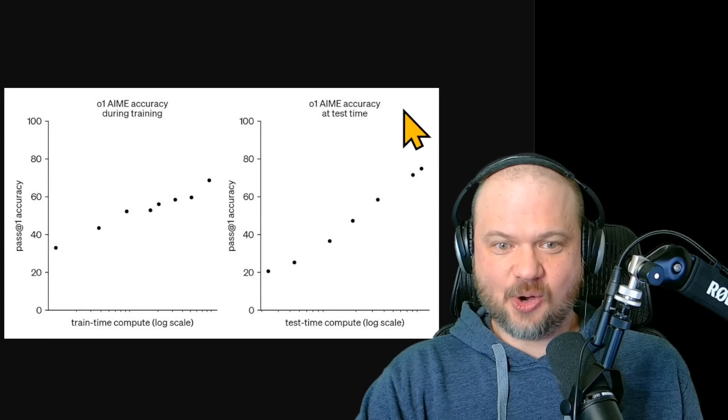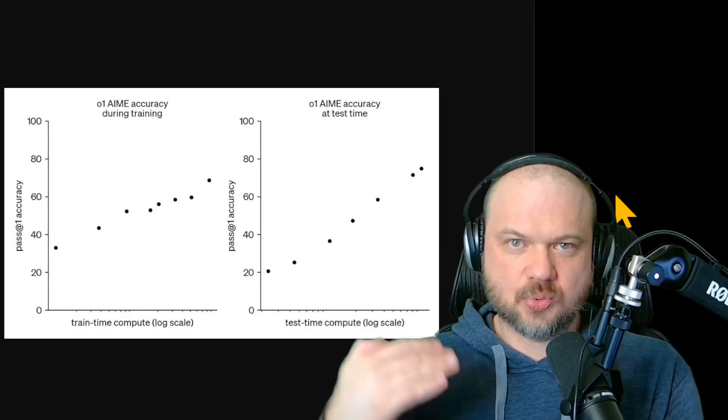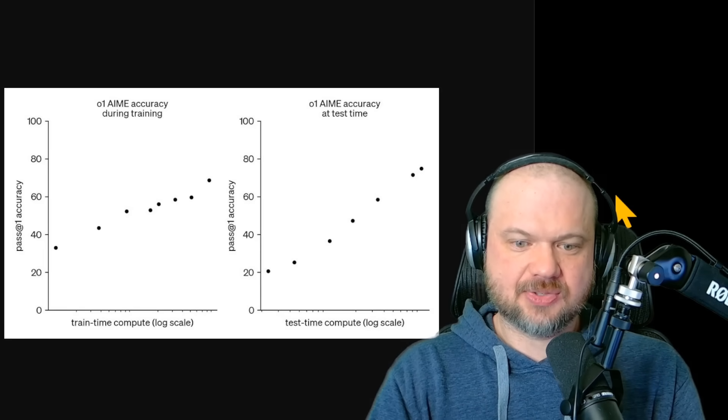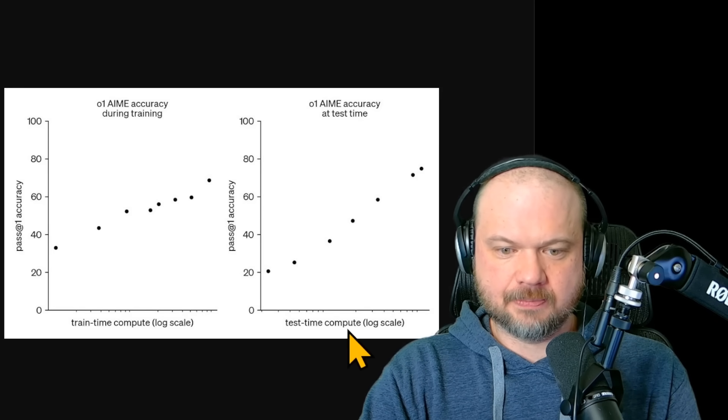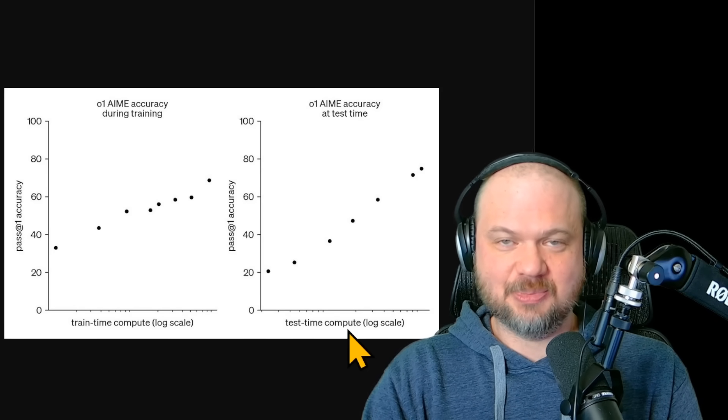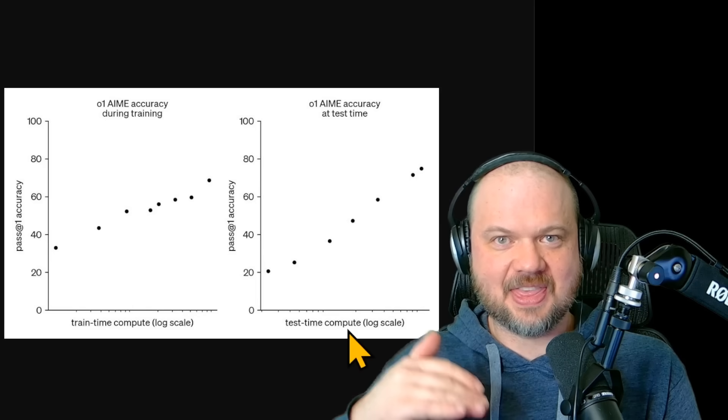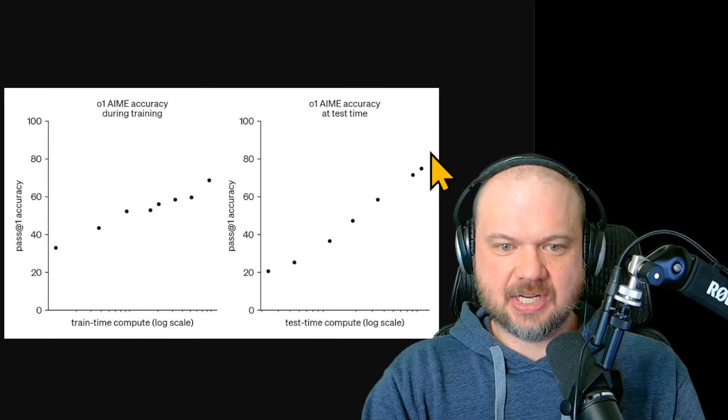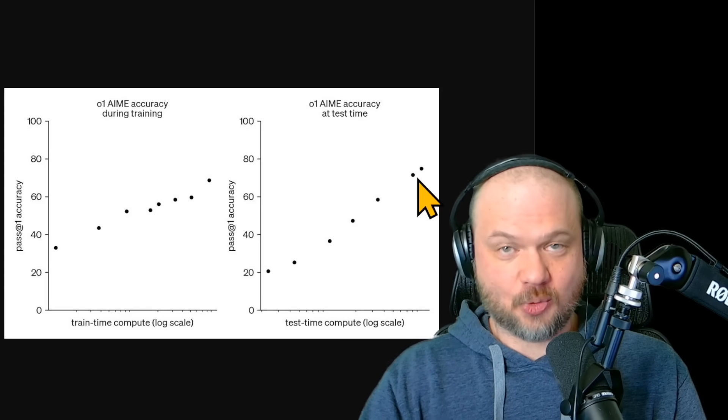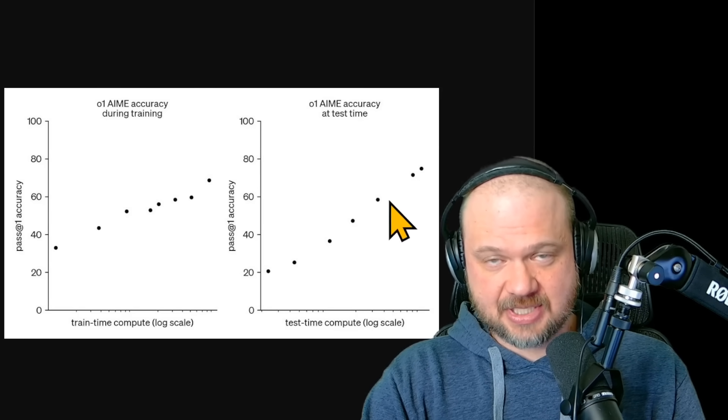Then the big deal with the O1 was its reasoning abilities, right? It was able to reason about a problem before answering it. And that ability to reason was called test time compute. So we gave it more hardware, more GPUs to burn some tokens thinking about it. And its thinking about it at length produced better results. So you can see it here. Again, the more tokens it uses, the more it thinks about it, the better the accuracy is.